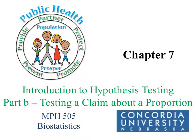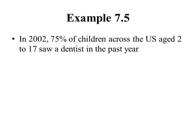Hello, this is Part B of the Chapter 7 lesson. In this part, we're going to talk about our second type of hypothesis test. This is a type of test where we test a claim about a single population proportion. It's going to be very similar to what we did in Part A. The only difference is that now we're making a claim about a proportion rather than a population mean.